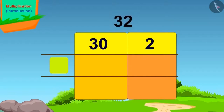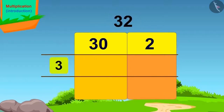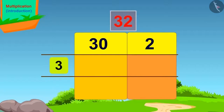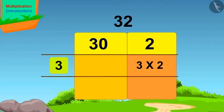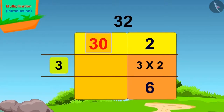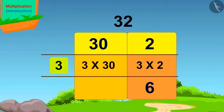What is the number we have to multiply 32 with? 3. We will write 3 here like this. Now we will multiply the first 2 by 3. 3 times 2 is 6. We will write this answer here. Now we will multiply 30 by 3. 3 times 30 is 90. We write this answer here.